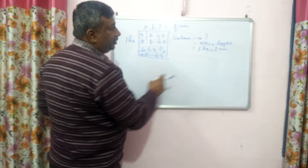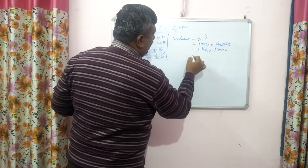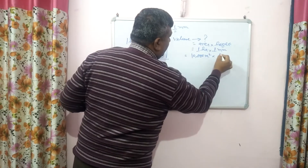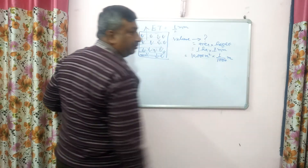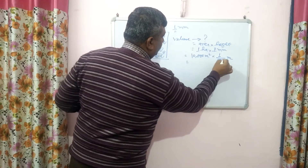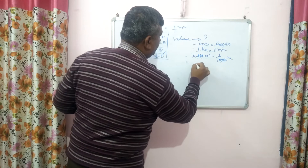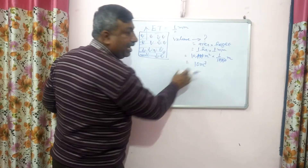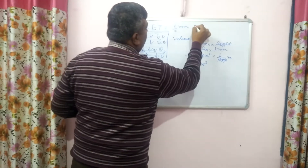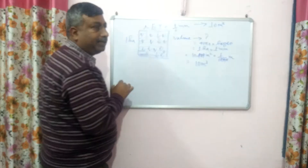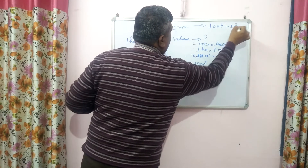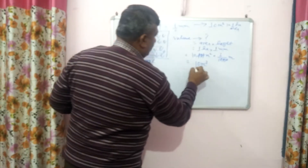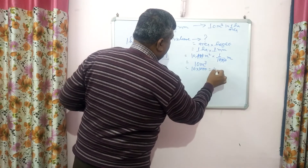All units must be the same for the calculation. We convert hectares to square metres and millimetres to metres. One hectare equals ten thousand square metres, and one millimetre equals one-thousandth of a metre. So the volume equals ten thousand square metres × one-thousandth metre, which equals ten cubic metres. This means if one millimetre of water is lost, ten cubic metres of water is lost from the field.